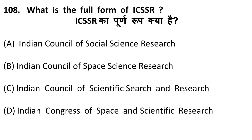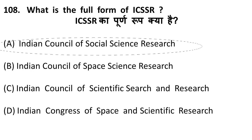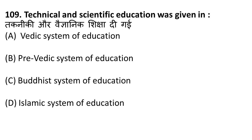Next question: what is the full form of ICSSR? ICSSR is Indian Council of Social Science Research — similar to CSIR (Council for Scientific and Industrial Research) but for social sciences. It is the main body overseeing research activity in social sciences, and its headquarters is in Delhi. The correct answer is A — Indian Council of Social Science Research.